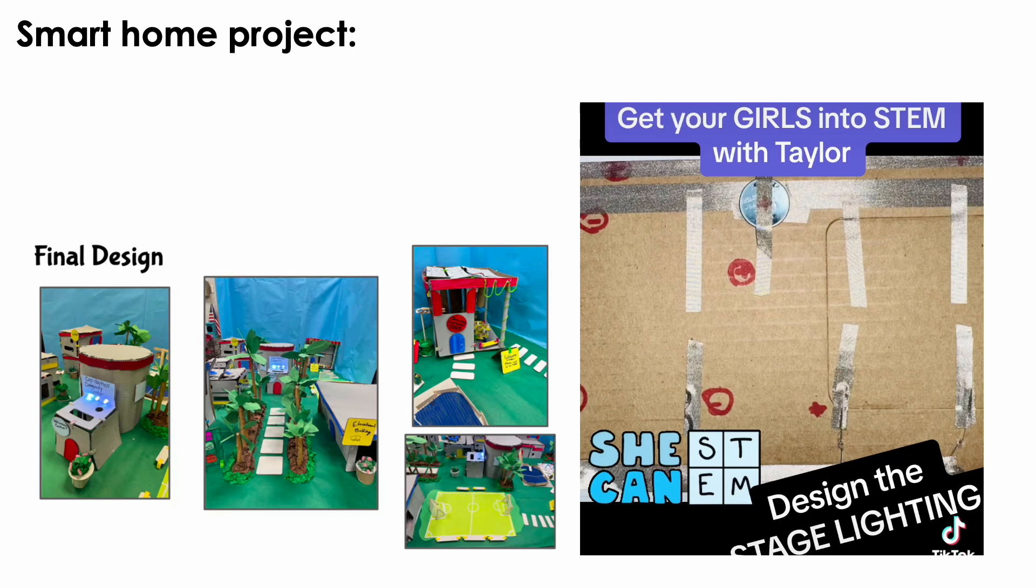So here you can see what an example of real student projects would look like. On the left that was a class that was working on a redesign of a city in Haiti and you can see how they incorporated their lighting into the entire community. And on the left you can see how we created smart lighting solutions for the Taylor Swift stage.